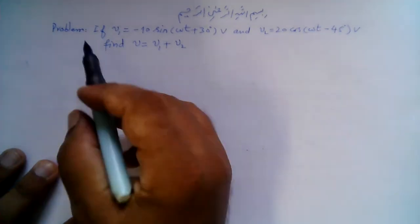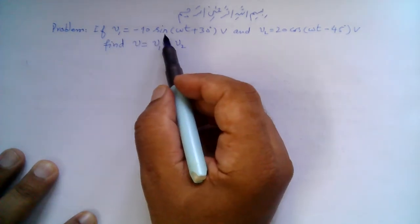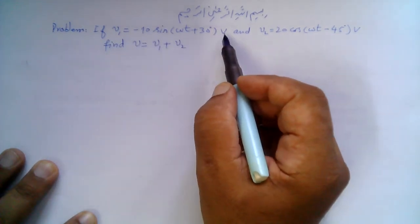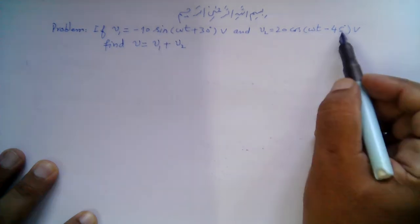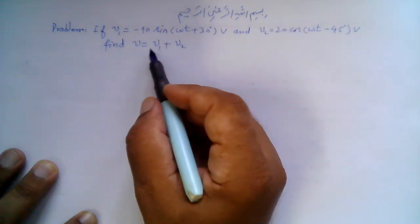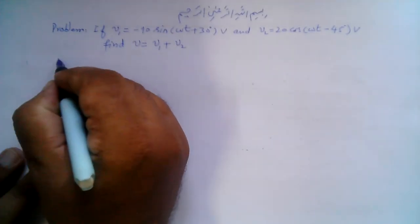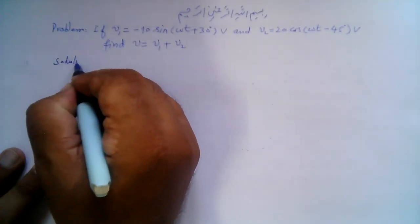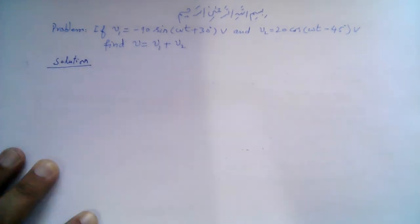Bismillahirrahmanirrahim. We have this problem: if v1 is equal to minus 10 sin(ωt + 30°) volts and v2 is equal to 20 cos(ωt − 45°) volts, find v = v1 + v2. If we add these sinusoids in the time domain, it is quite a difficult operation.